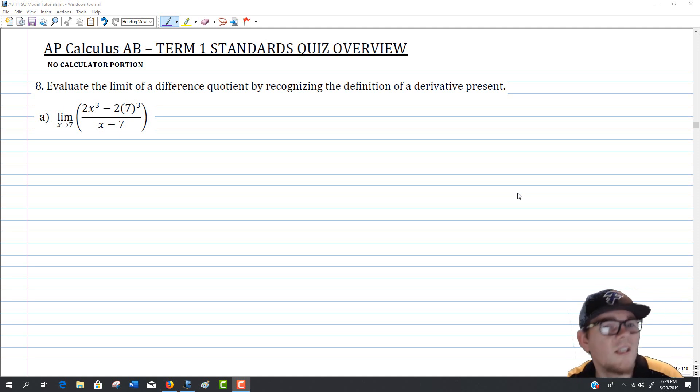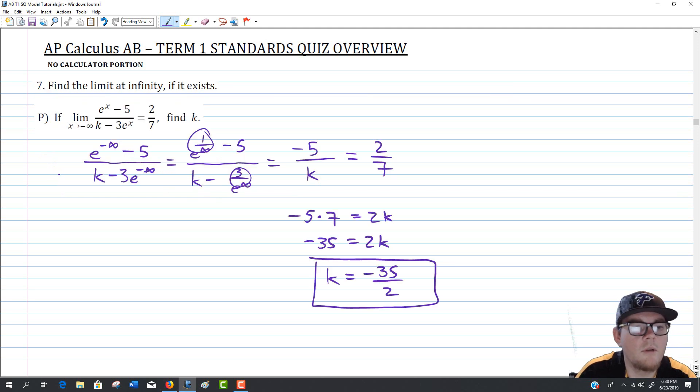Basically asks you to once again evaluate some limits, but each of these limits is actually representative of a particular derivative. So technically you're probably going to use more derivative definition techniques than anything else. So in looking at these, each of these ones is going to be evaluated, as it says in the instructions, by recognizing the definition of the derivative present. So before we dig right in, it's worth pointing out that there are really two different expressions here that we could be on the lookout for.